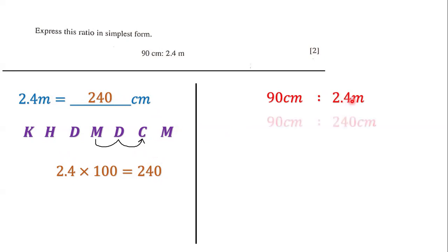So we have 90 centimeters to 2.4 meters. We bring down the 90 centimeters, and we know that 2.4 meters is equal to 240 centimeters. Now the units are the same, and so let's simplify. What number can go into both 90 and 240? Let's use 10.